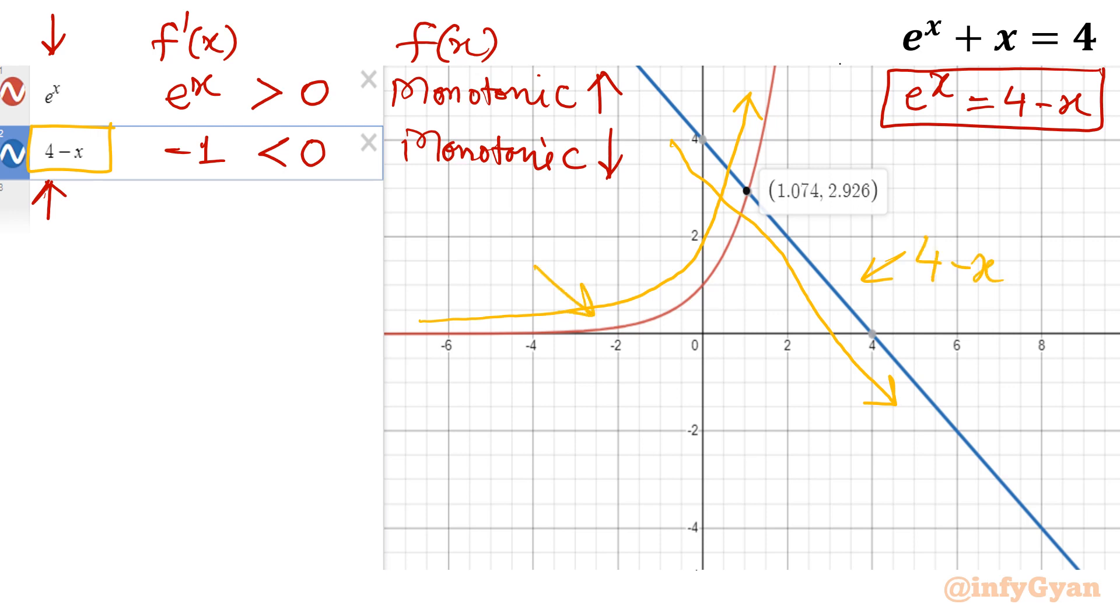This graph is e raised to the power x. You can see because of one function is increasing, another is dipping down, decreasing function. So at most one solution is there. At most one solution. This is our conclusion. So that solution is already we have calculated, which is let me write here: 1.074.